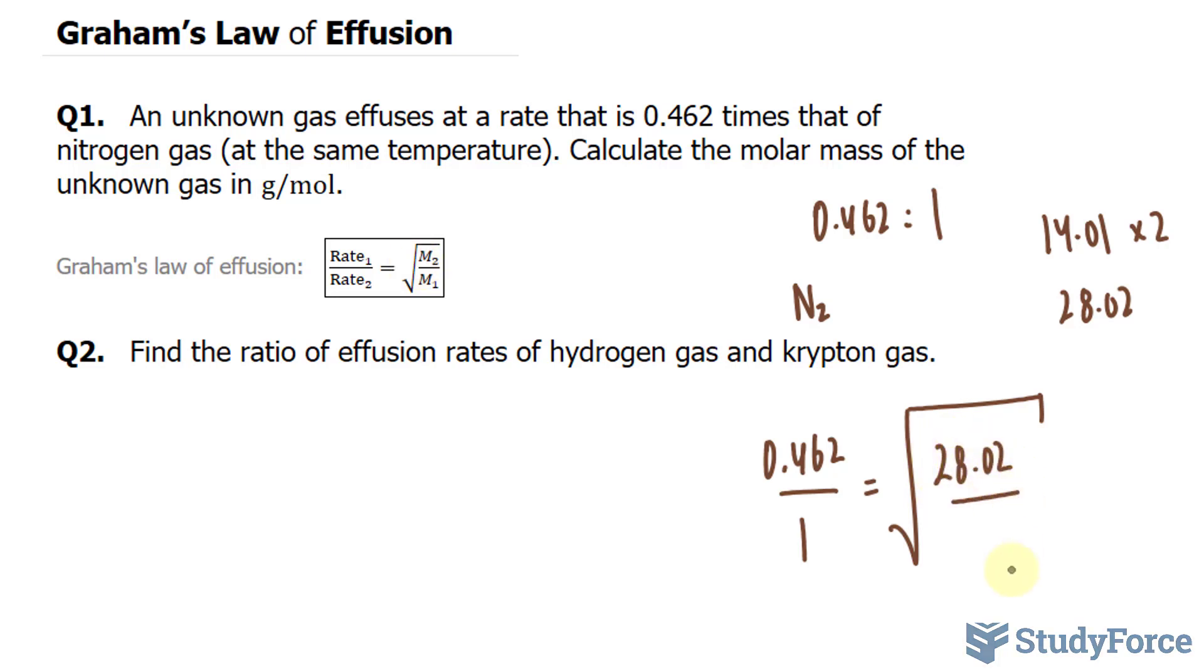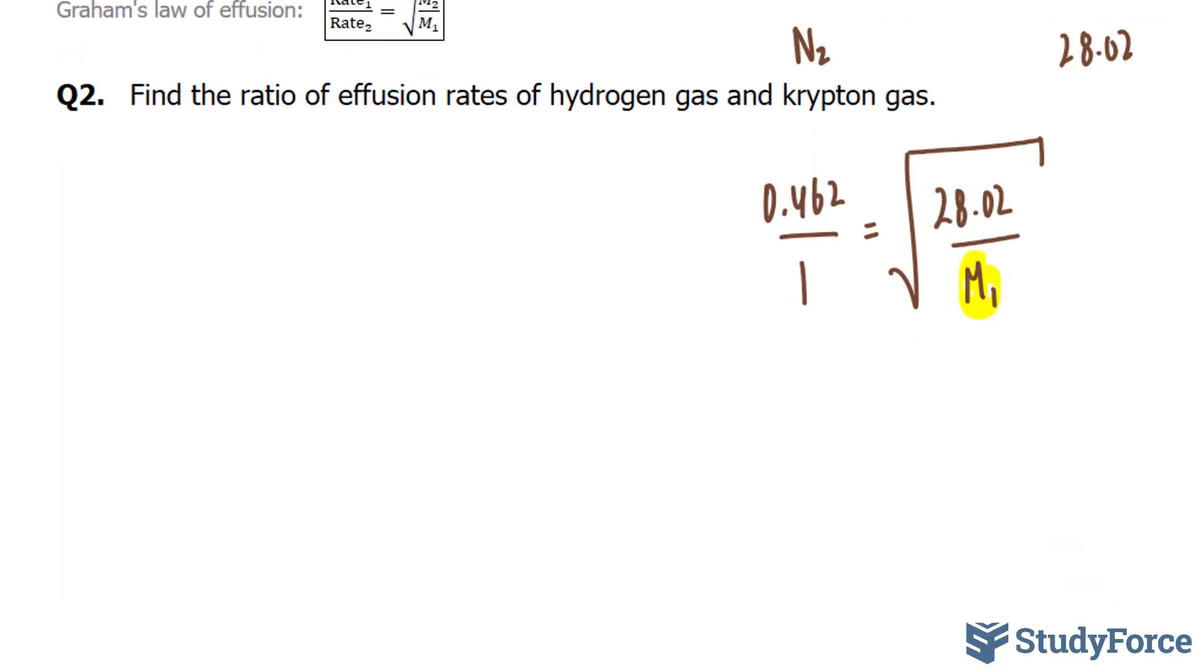We'll place this number in the numerator of this fraction: 28.02 divided by M1, which is the molar mass of our unknown gas. We don't know what that is, and we want to solve for M1. To do this, we'll need to algebraically manipulate this equation.